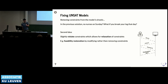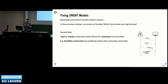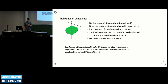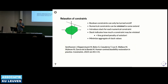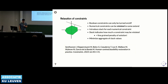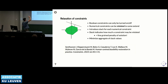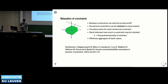Instead of removing constraints entirely, we can also violate them by a tiny amount—this is relaxation. Logical constraints are either violated or not, but numerical constraints can be violated by a small amount, which is more fine-grained. In feasibility restoration, you modify constraints rather than removing them. The idea is to push the feasible region slightly outward to get more solutions without removing that boundary entirely. This is implemented using slack variables, where each slack indicates how far the feasible region is pushed.